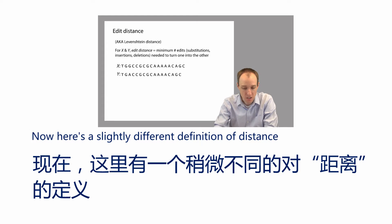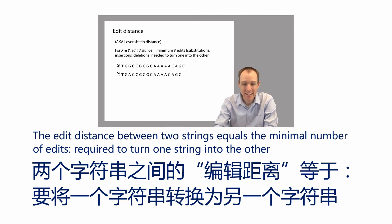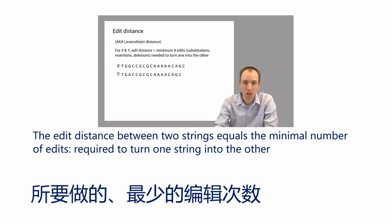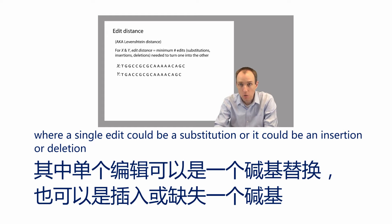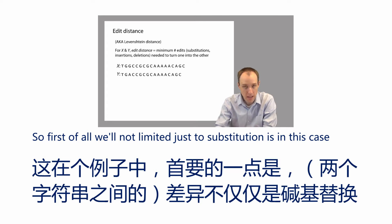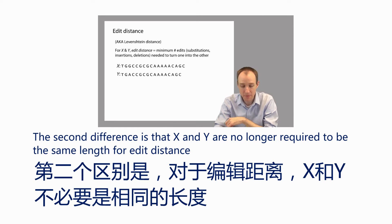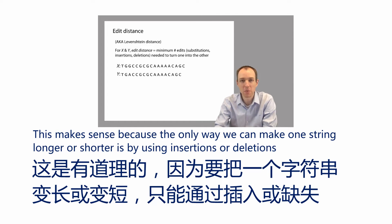Here's a slightly different definition of distance called edit distance, or sometimes Levenshtein distance. The edit distance between two strings equals the minimal number of edits required to turn one string into the other, where a single edit could be a substitution, an insertion, or a deletion. Two important differences from Hamming distance: first, we're not limited to substitutions; second, x and y are no longer required to be the same length, since insertions and deletions can change string length.